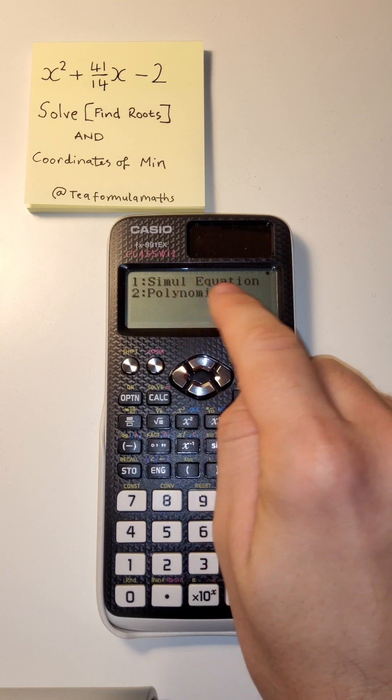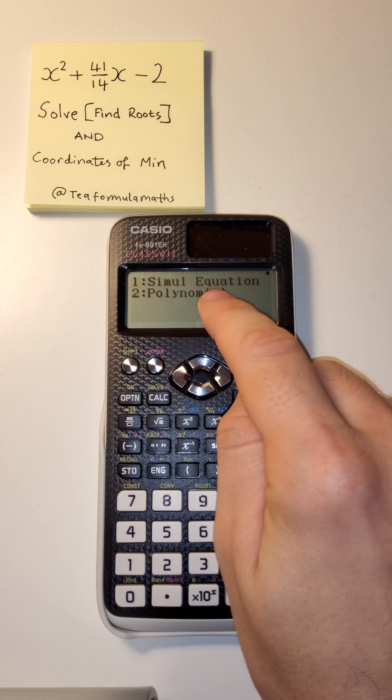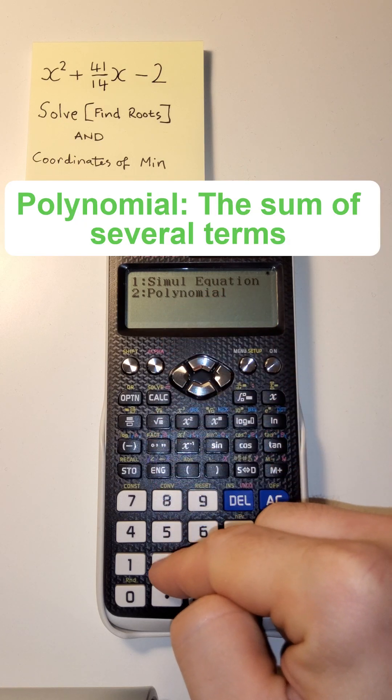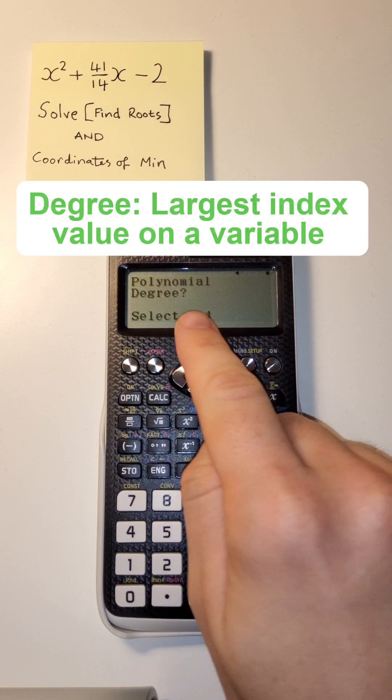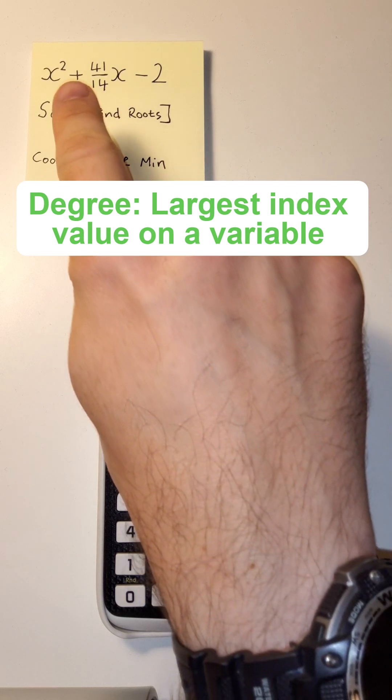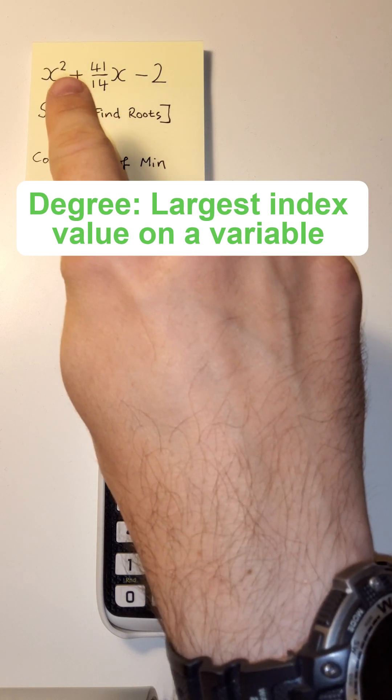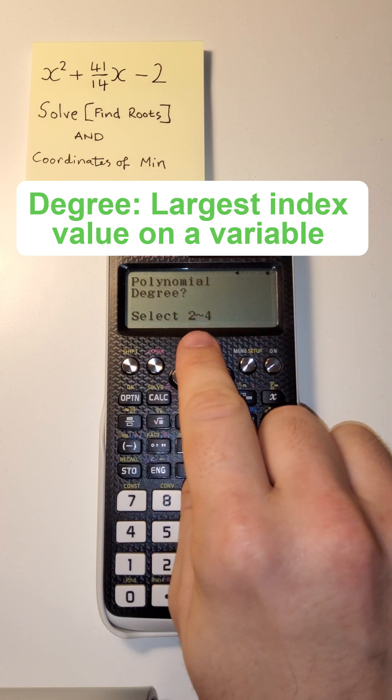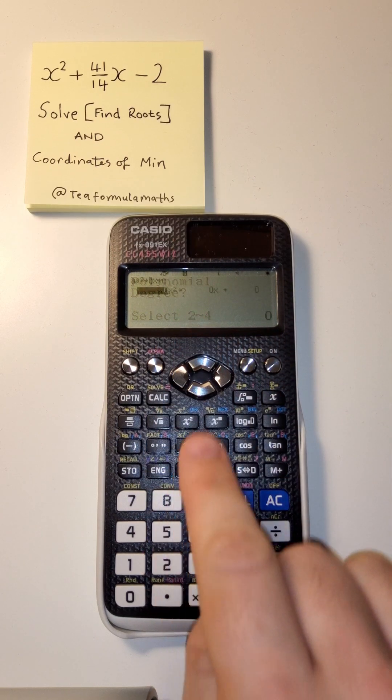There's simultaneous equations, useful for another lesson. But here, polynomials. We're going to click the number to get into the section we want. Quadratic up here—the highest power is two. So it's called a polynomial of degree two. We're just going to click two.